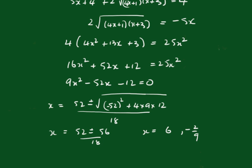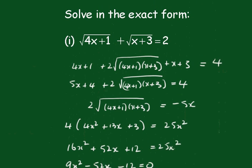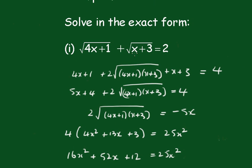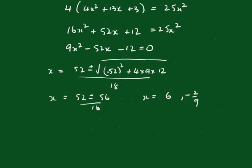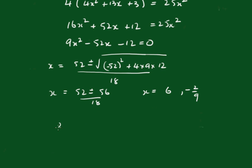If we check the 6 back in the original equation, 6 plus 3 is 9, and the square root of 9 is 3, so clearly 6 can't be the solution. The only solution is x equals minus 2 ninths.